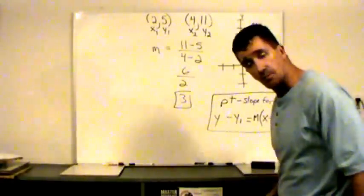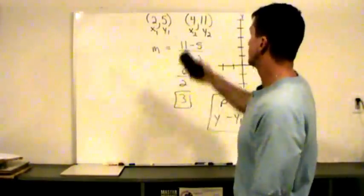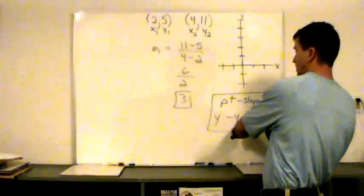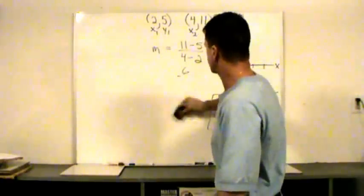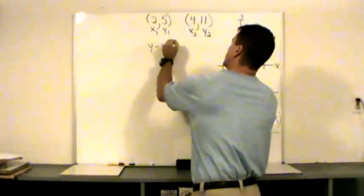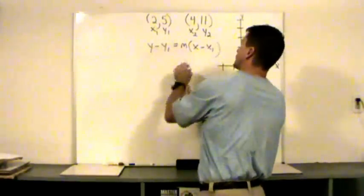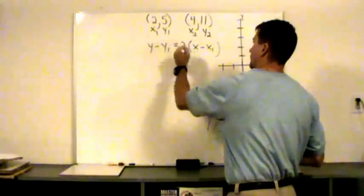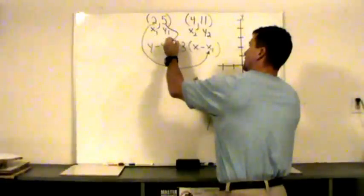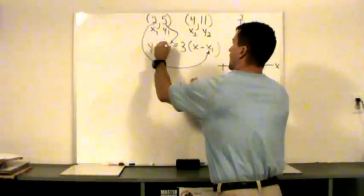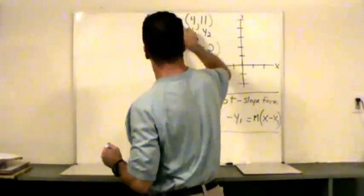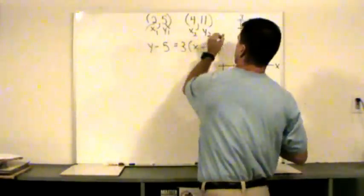Let's find the equation of this line in point-slope form. We know the slope is 3, so we put that in for m. Then we substitute the point x sub 1, y sub 1 — putting the 2 and the 5 in there. The equation is: y minus y sub 1 equals m times parentheses x minus x sub 1. Putting in 3 for slope, 2 for x sub 1, and 5 for y sub 1 — this is the equation of the line in point-slope form.